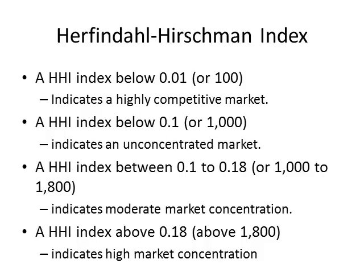If the HHI is between 0.10 and 0.18, or if the percentage used is between 1,000 and 1,800, then the market is considered to have a moderate market concentration. An HHI above 0.18, or above 1,800 if a percentage is used, then the market is considered to have a high market concentration.